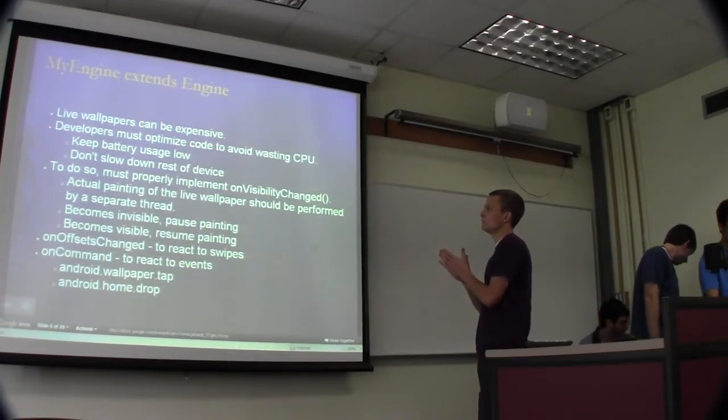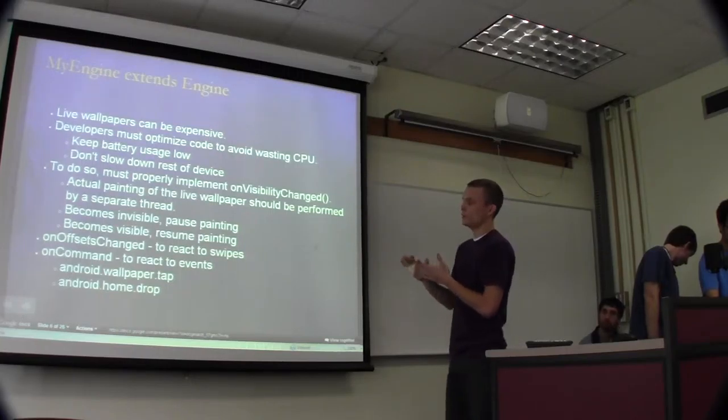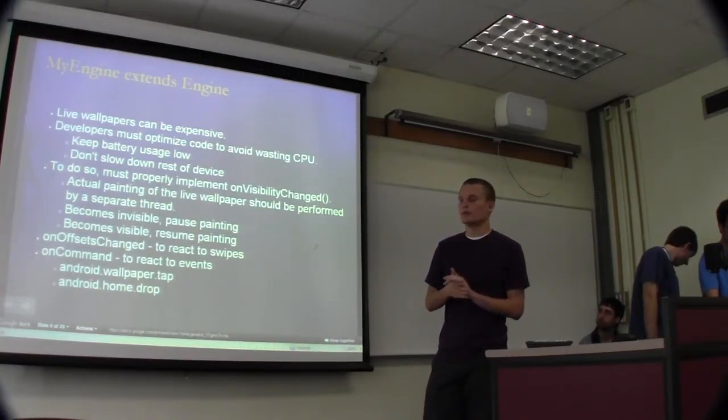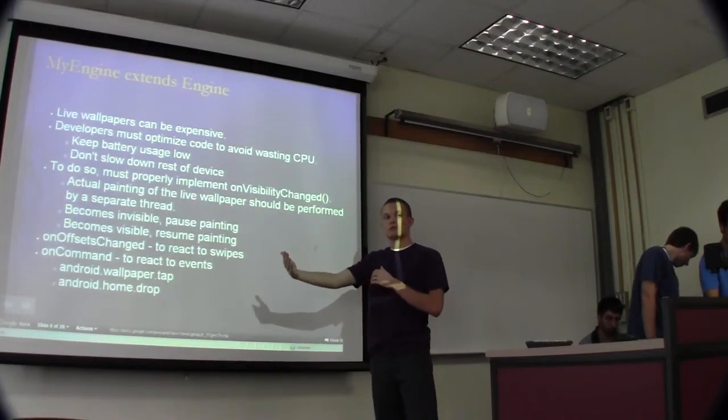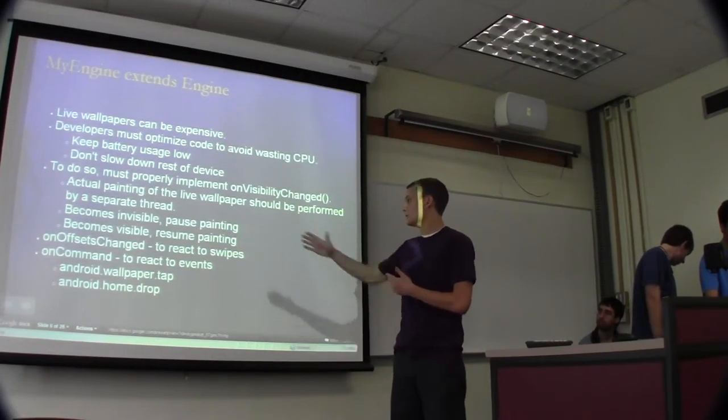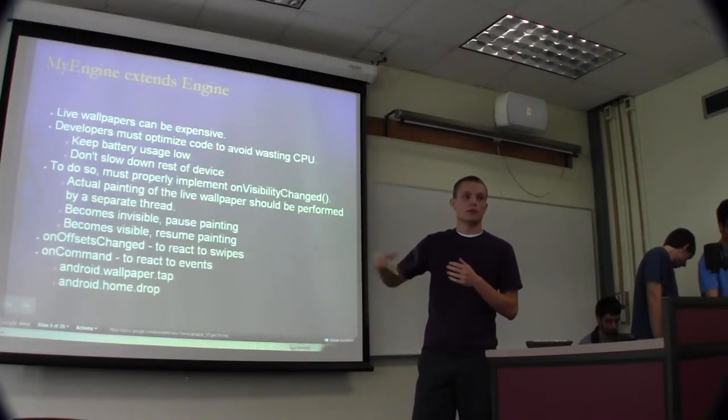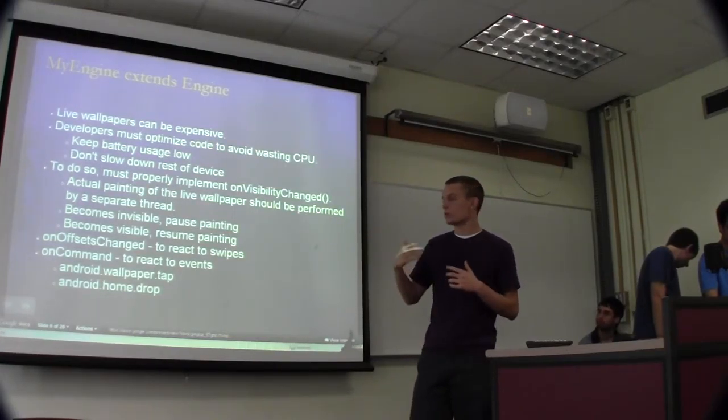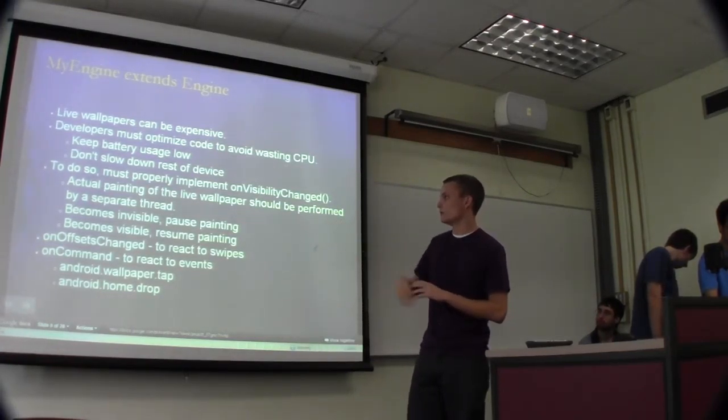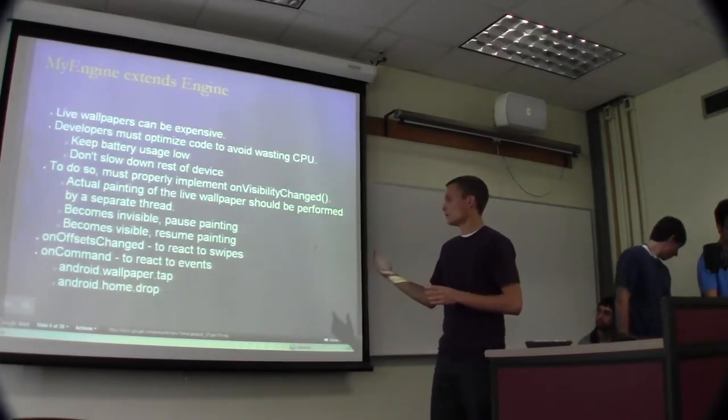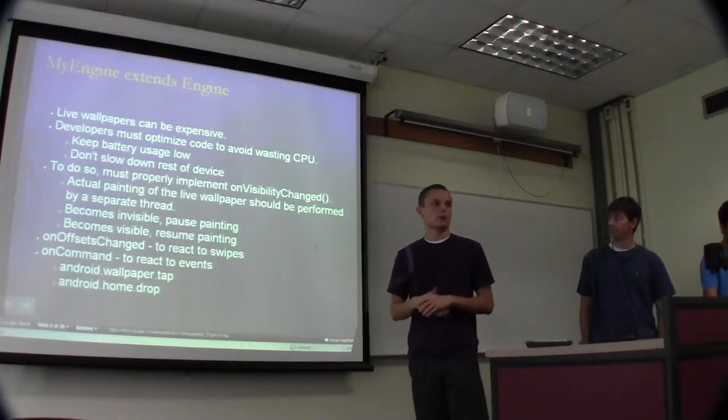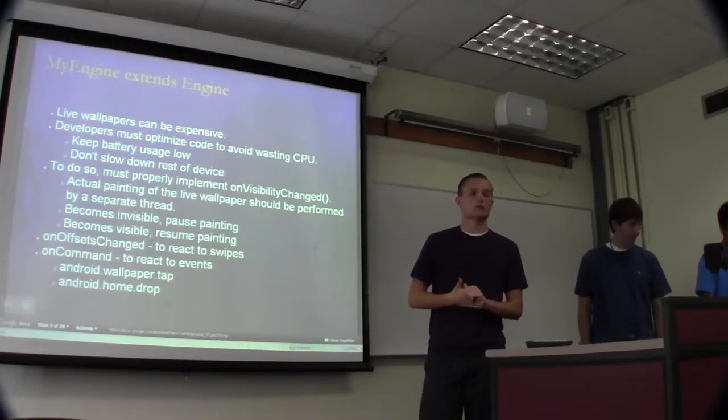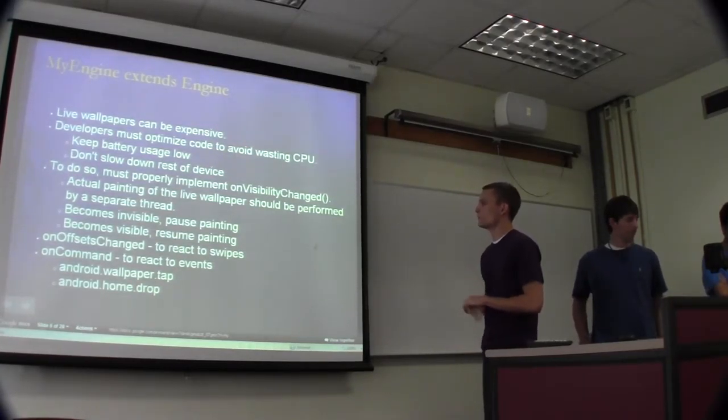Basically the actual painting in live wallpapers is usually done in its own thread. And on-visibility change when the wallpaper becomes invisible and an application is in the foreground, you need to make sure that you pause the painting or make sure the thread is idling and no longer running. And similarly when it becomes visible you need to resume painting. So this is the equivalent of the on-resume and on-pause methods for an application. So you need to make sure these are implemented correctly.